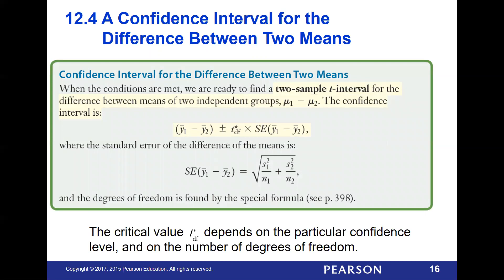To construct the confidence interval, you take the difference between your two sample means, plus or minus the critical t value related to your degrees of freedom, times your standard error for the difference of those two means — using the same definition for standard error as before. Your critical value depends on your confidence level and your number of degrees of freedom, which you look up from the t table we reviewed last week.